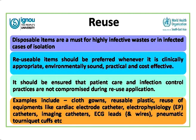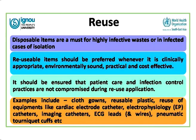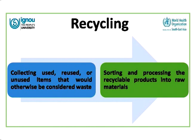Reuse is a third common strategy for reducing waste. Whether a substance should be reused depends on factors such as the infectivity of the substance — disposable items are a must for highly infective cases. Reuse should be preferred where it is clinically appropriate, environmentally sound, and practically and cost-effective, ensuring patient care and infection control practices are not compromised. Examples of reusable items include cloth gowns, reusable plastic, and equipment like cardiac catheters, electrodes, and electrophysiological catheters.